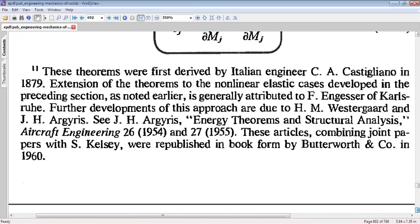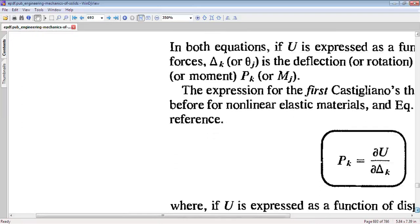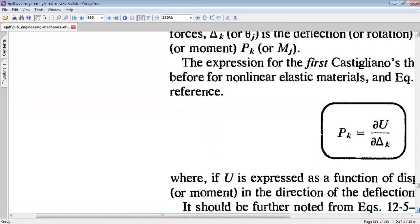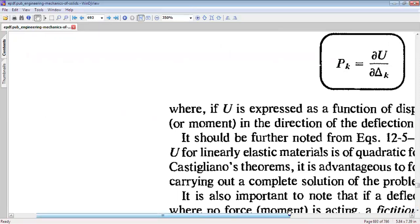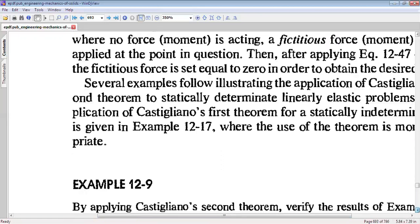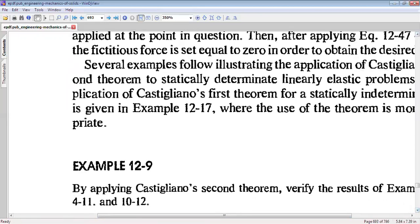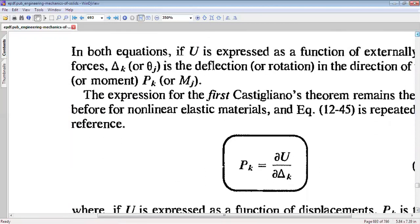Also for linear elastic materials, we can write Pk equals partial U by partial delta-k, and Mj equals partial U by partial theta-j.